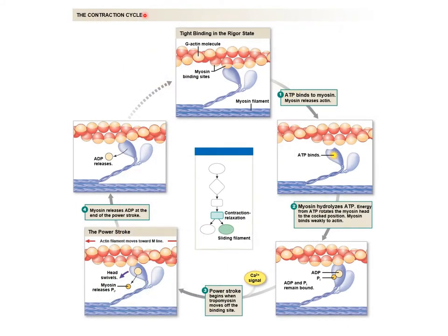Now we have what is known as the contraction-relaxation cycle. This figure is in your book and I find it very useful, though there are a few idiosyncrasies. I prefer to start at the five o'clock position, which is the relaxed state — where the muscle is most of the time. We have two myosin heads here: one at an acute angle and one at an obtuse angle.